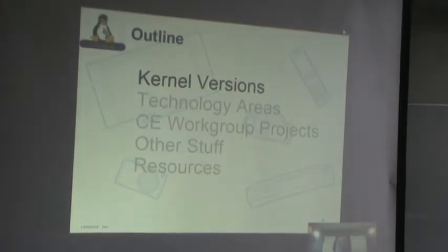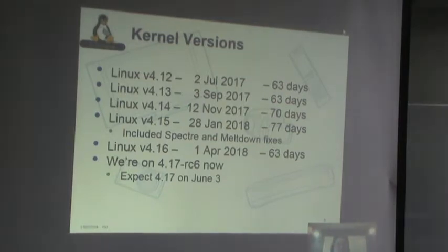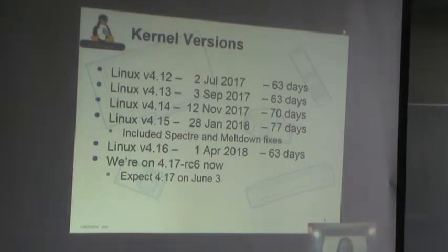Let's start with kernel versions. Here are the kernel versions we've had in the last year, from 4.12, which was released last July, through 4.14 and 4.15. The 4.15 release cycle was 77 days or 11 weeks rather than the normal 9 weeks, and that was because of Spectre and Meltdown. With 4.16, we got back on track with a 9-week kernel release cycle.